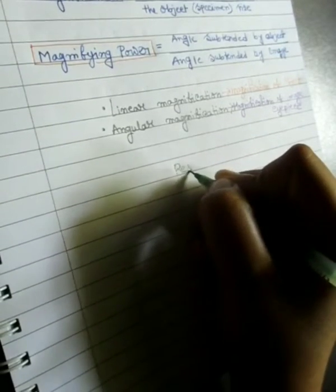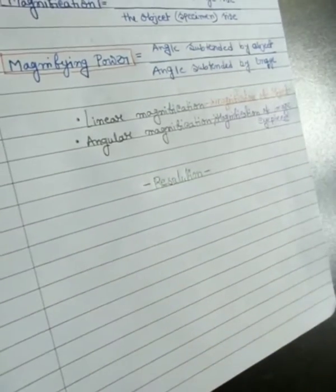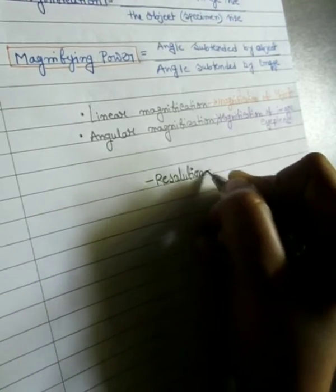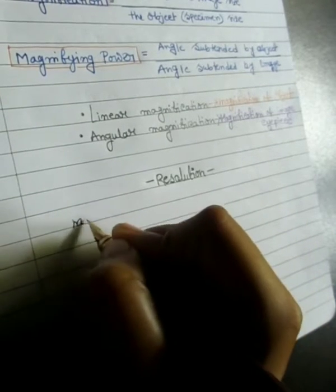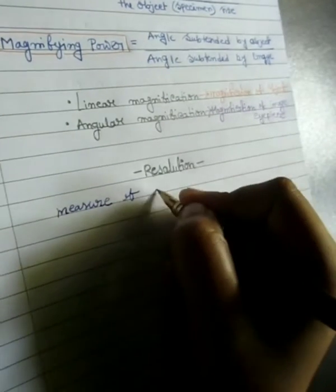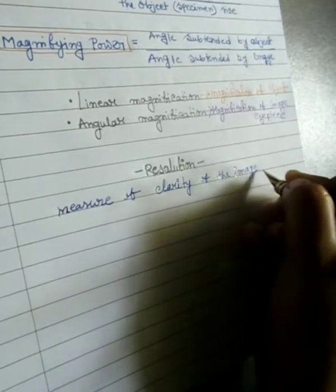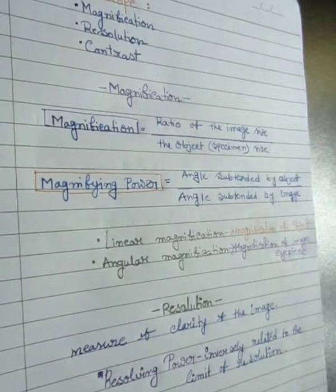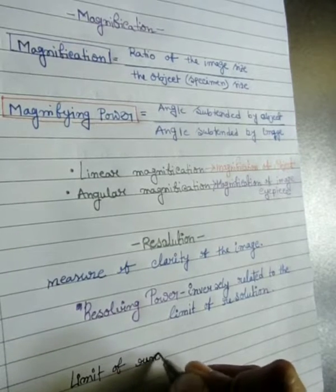Resolution is a measure of the clarity of the image. Resolving power is the ability of a magnifying instrument to distinguish two objects that are close together. The resolving power is inversely related to the limit of resolution. The limit of resolution is defined as the minimum distance between two points that allows for their discrimination as two separate points. Thus, the higher the resolving power, the smaller the limit of resolution.